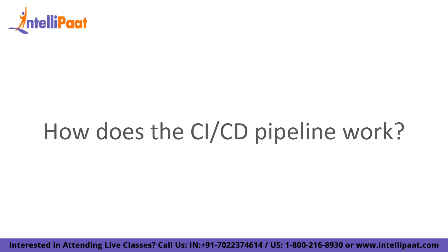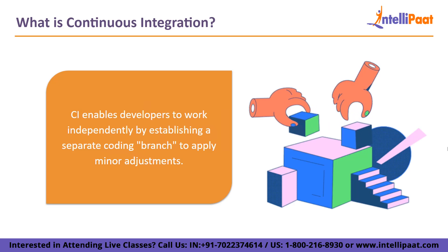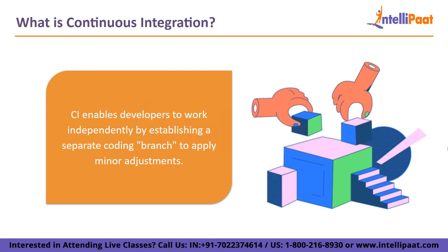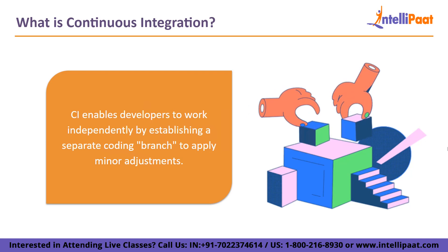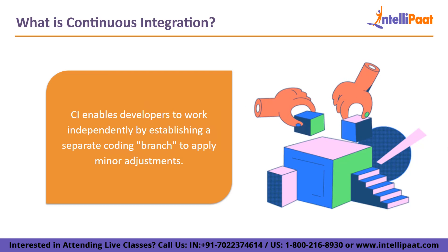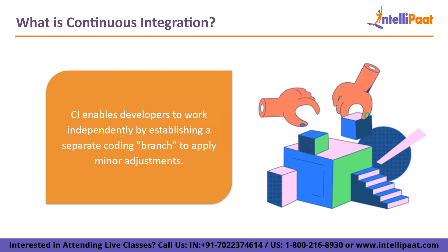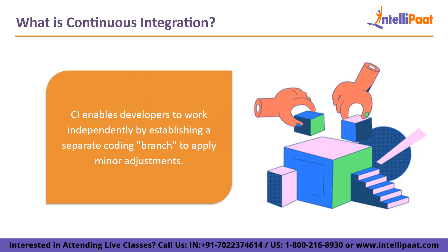How does the CICD pipeline work? The CI in CICD stands for continuous integration. With continuous integration, the CICD process gets started. CI enables developers to work independently by establishing a separate coding branch to apply minor adjustments. A versioning technology like Git often allows developers to take snapshots of the source code as they work. If an issue arises, the developer can quickly roll back the code base to its prior state. An automated method employing scripts to build and test code modifications is then pushed. A CI server merges the source code modification into the master code — often known as trunk — following the build stage. Continuous testing provides quicker issue solutions, guarantees functioning and ultimately improves teamwork and product quality.